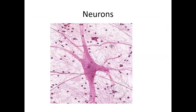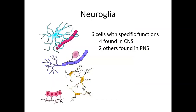Getting back to basics, you should hopefully remember this slide from when we talked about tissues and neurons. This is a picture taken from within the central nervous system, where we have neurons and neural glial cells. We've spent time talking about neurons, so now I want to talk about the neural glial cells — all those other specialized cells. There are six different types: four found only in the central nervous system, and two found only in the peripheral nervous system.